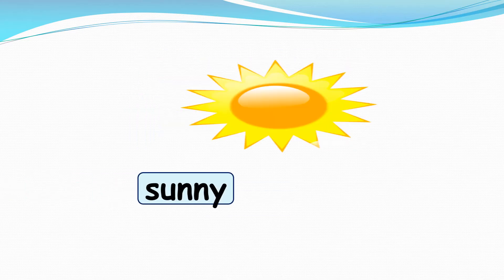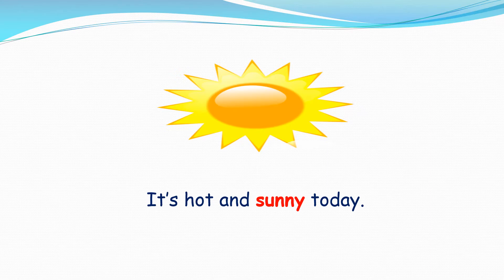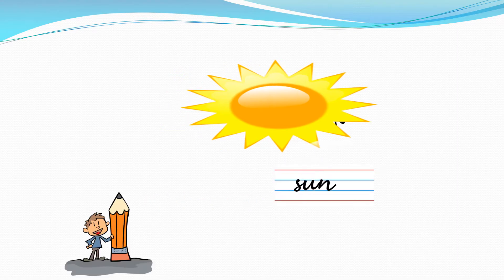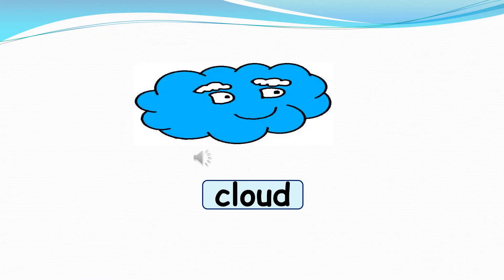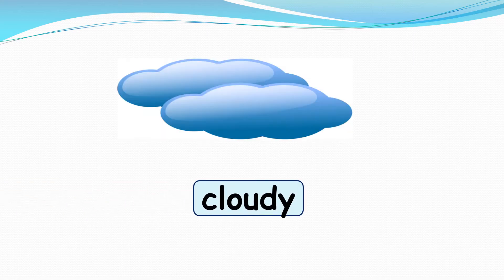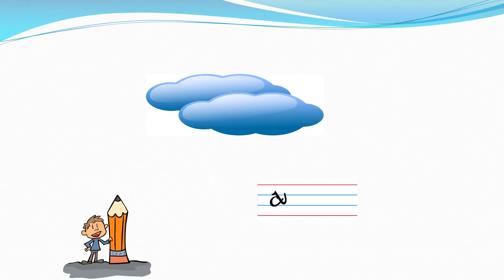The first word is sun. Sunny — it's hot and sunny today. The second word is cloud, cloudy. It's cloudy — I think it's going to rain.